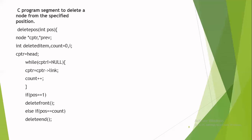Next, check whether the position entered by the user is 1. If the position is 1, call the delete_front function because you are deleting the first node from the linked list — we have already discussed this. If the position entered by the user is equal to count — for example, if there are five nodes and you want to delete the fifth node, the position equals five and the counter is also five — then call the delete_end function because you are deleting the last node in the linked list.